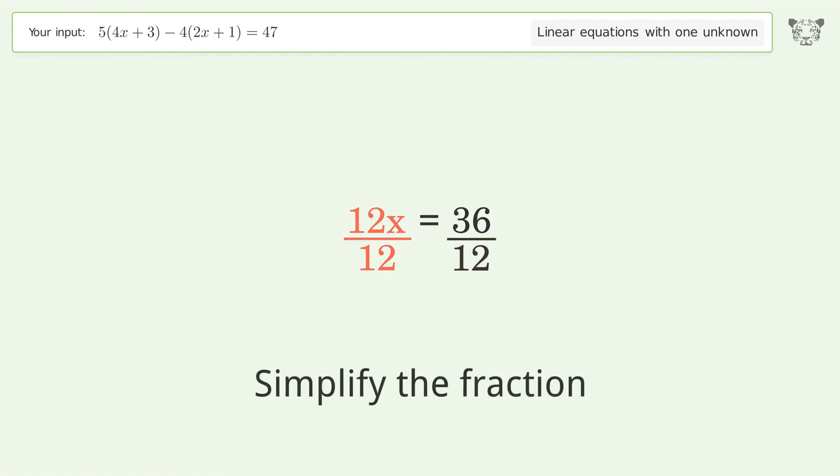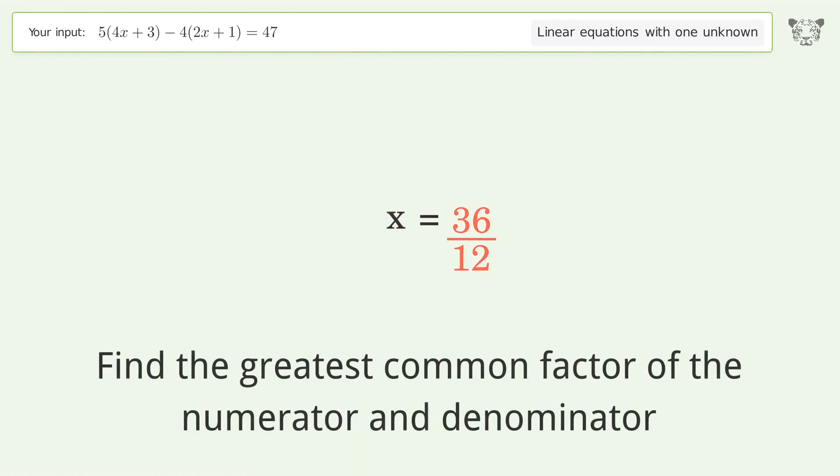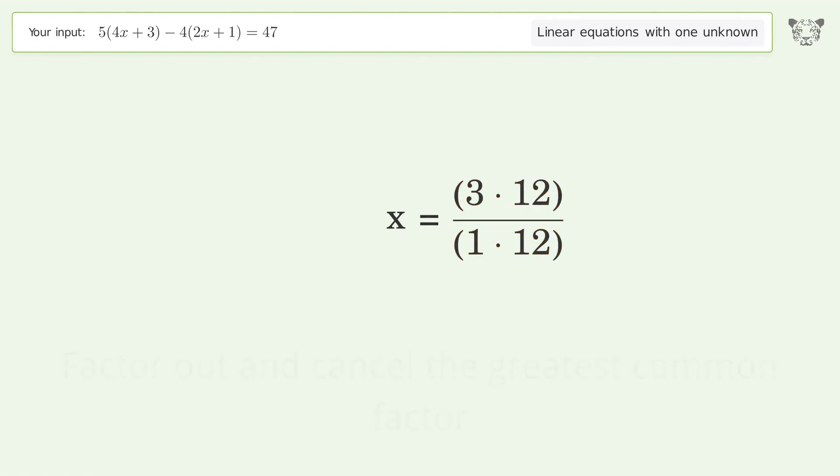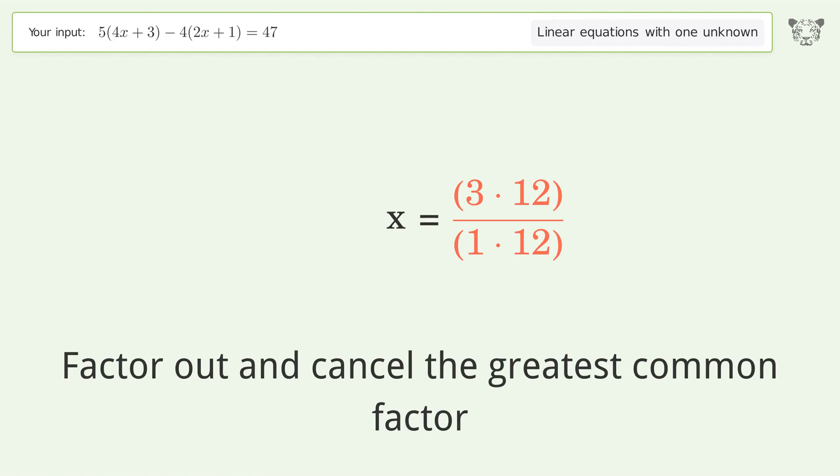Simplify the fraction. Find the greatest common factor of the numerator and denominator. Factor out and cancel the greatest common factor.